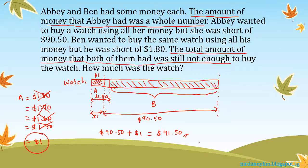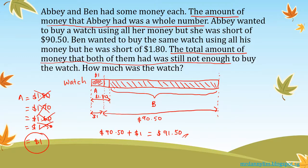That is your four-mark answer. To check: Abby had one dollar, she is short $90.50 to buy the watch — so the watch costs $91.50. Correct. Then for Ben, you find what Ben has, add $1.80, and you get the total cost of the watch again. This is the only answer possible because of the whole number condition.